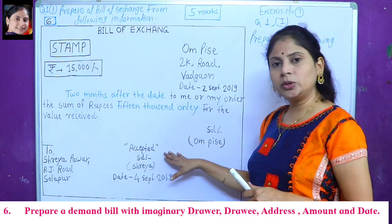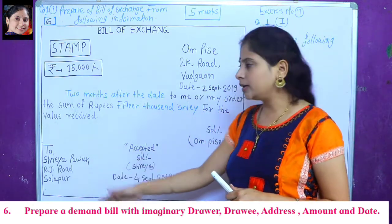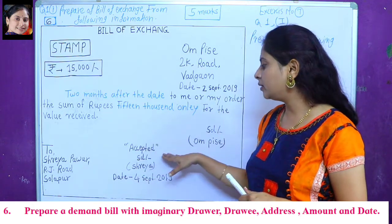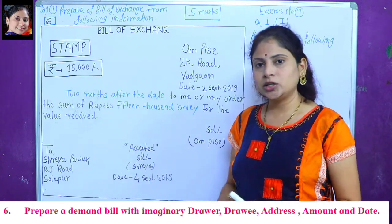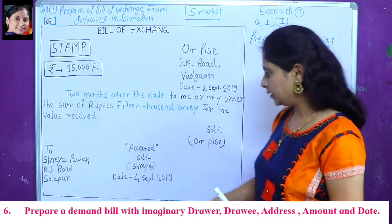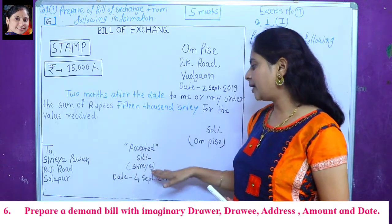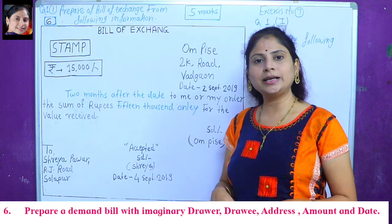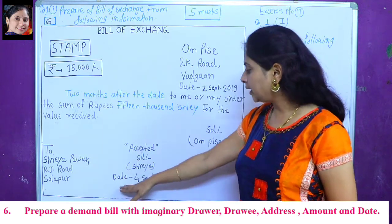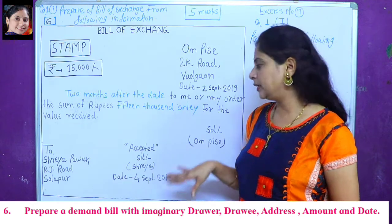The drawee will accept and sign the bill. Accepted — the drawee's signature with conditions noted. Date: September/November 2019.